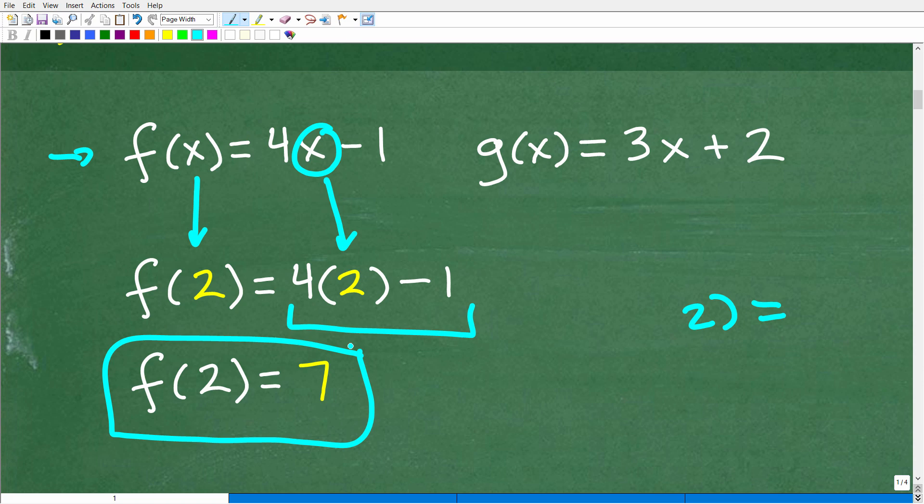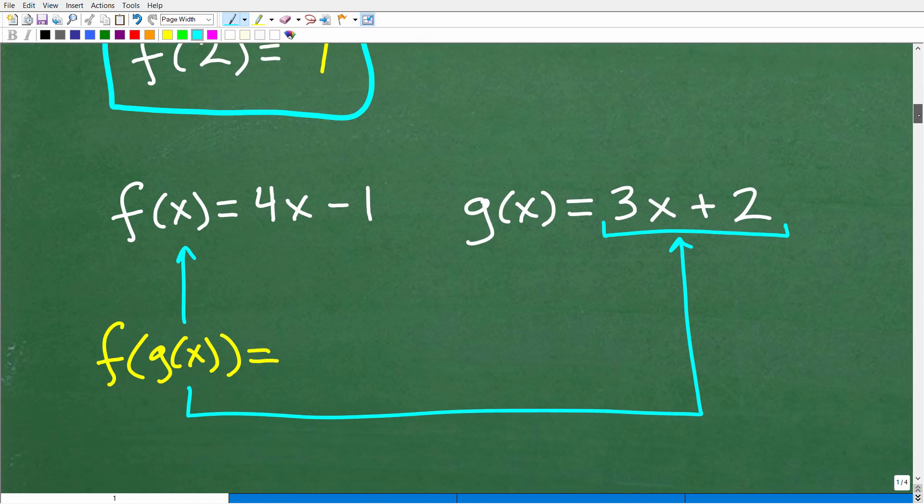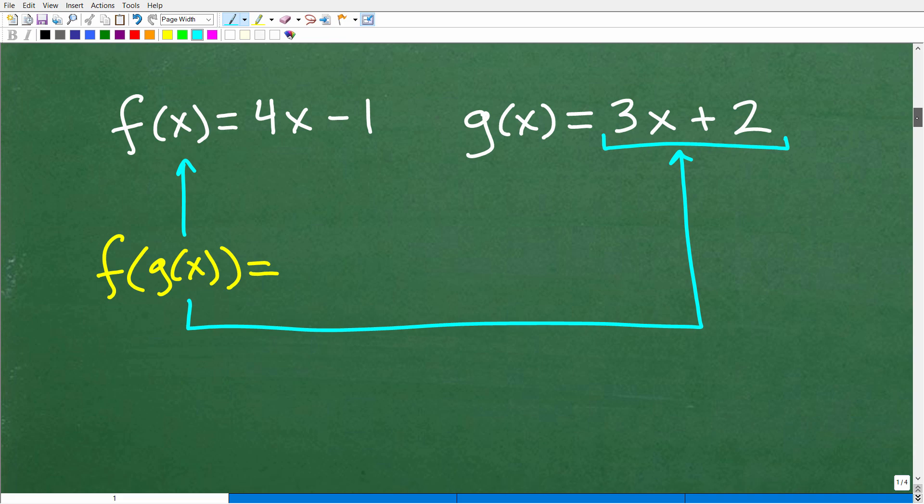Okay. So that's just a basic example of evaluating a function. Now, we need to understand this because we're going to be evaluating this function not with a number, but with another function. And that is the whole idea behind a composite function. So let's go ahead and take a look at what that looks like.